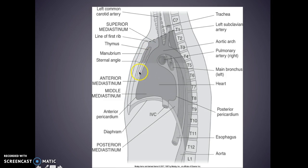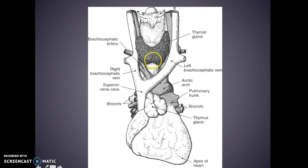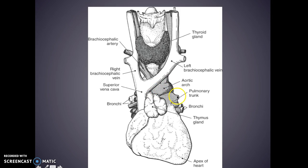The main thing here that I want you to see is your thymus gland right here in your superior mediastinum. When we're looking here, you have your thyroid gland — this is a venous system. Coming down: this is your left brachiocephalic vein coming down, right brachiocephalic, to your superior vena cava into your right atrium. This is your aortic arch — that's artery — and you have your thymus gland right here.